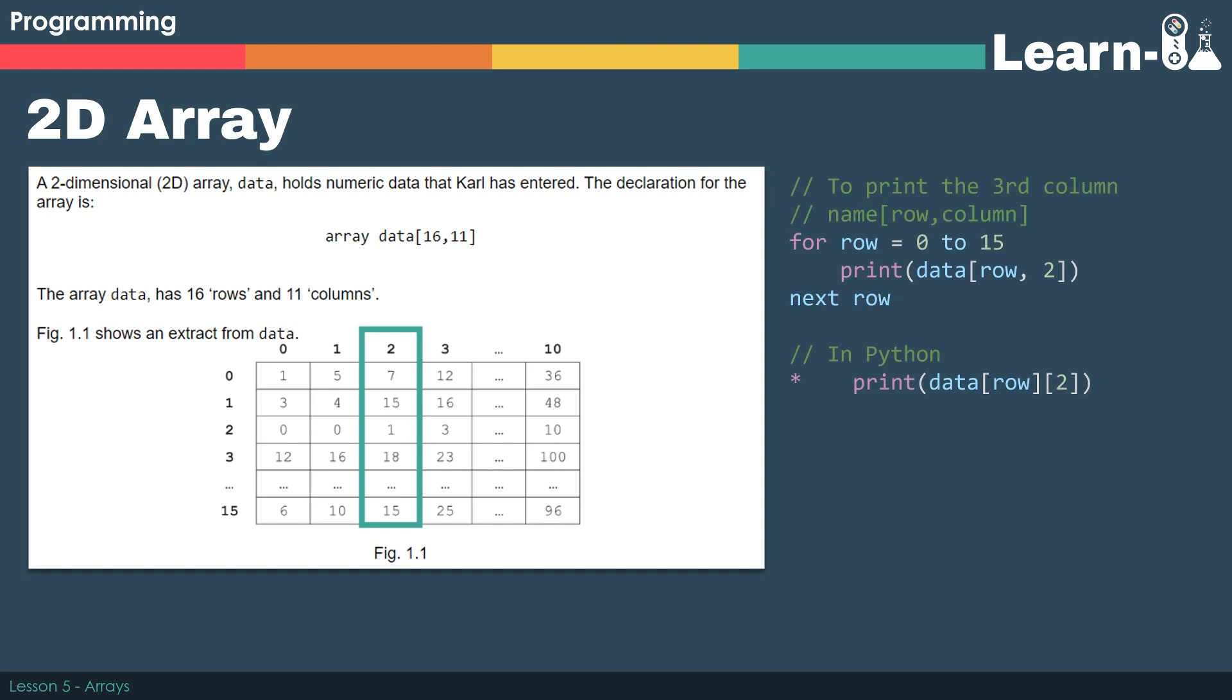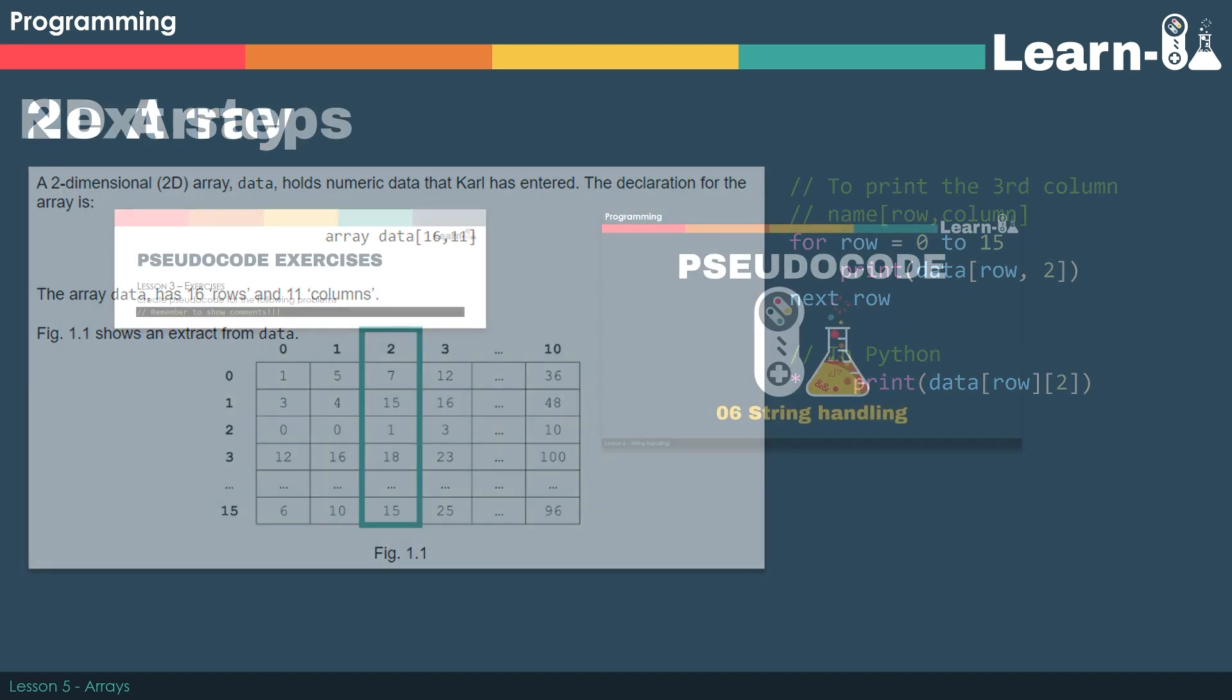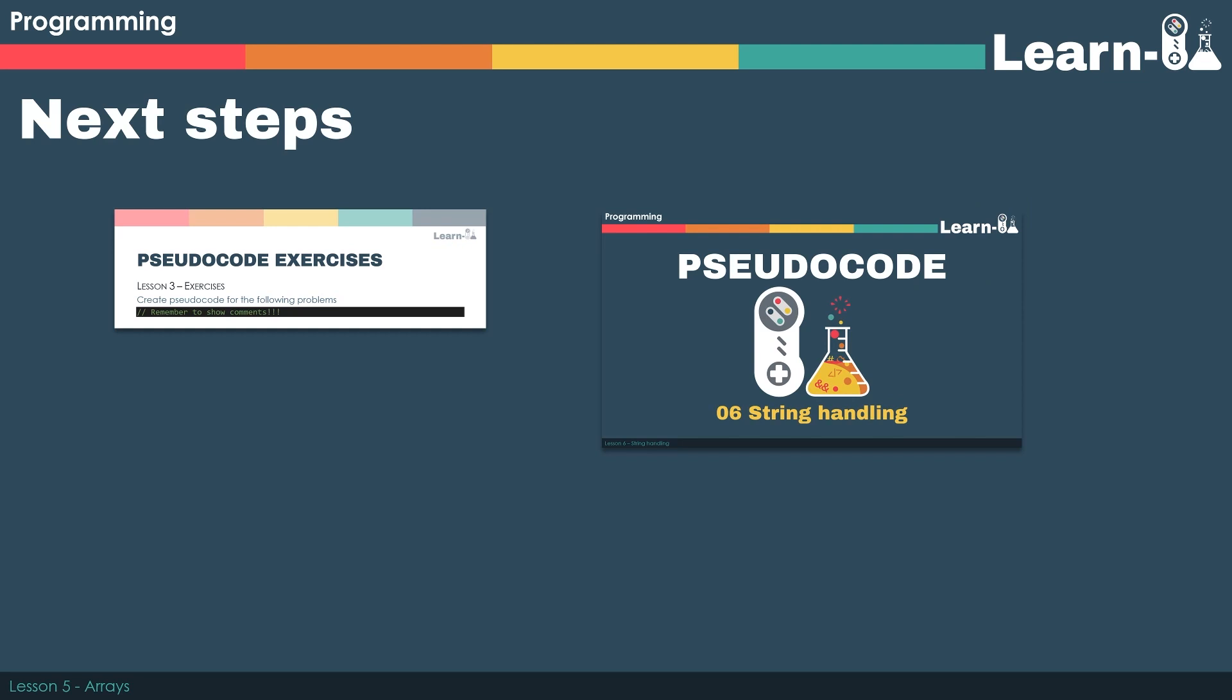It's very subtly different from Python where we would use square brackets to separate the row and the column. Next step: Lesson 3 exercises or take a look at the string handling video.